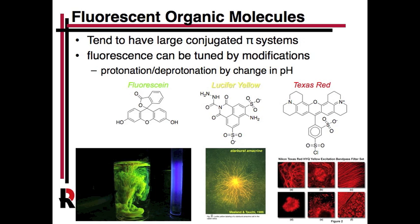Fluorescein is sort of the king of the fluorophores because it's one of the first ones — it has a green emission when excited by UV light. There are other cool ones: one called Lucifer Yellow, which is a nice yellow color, and Texas Red. There are hundreds of them available to buy online, though they're usually not too useful unless you attach them to something else. You can get all these different colors — blue, reds, oranges — and they all have slightly different properties, so you can use two or more at once.